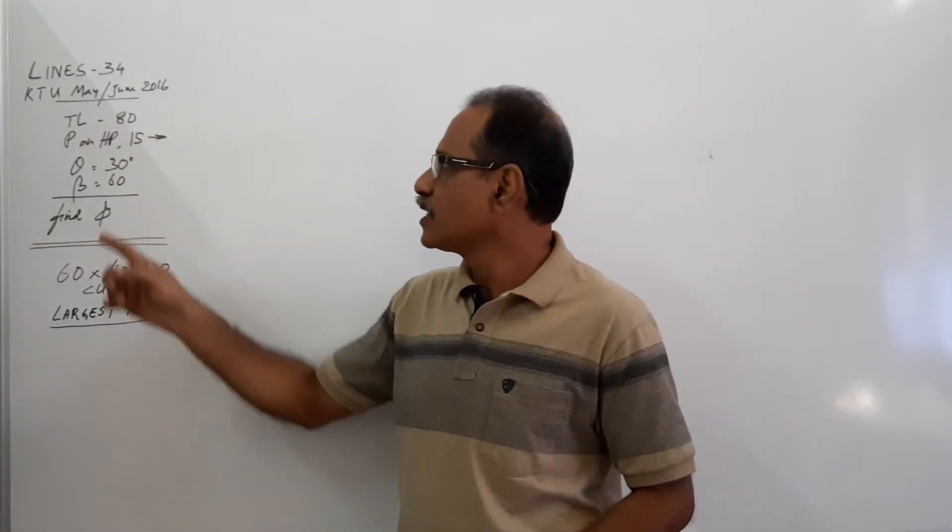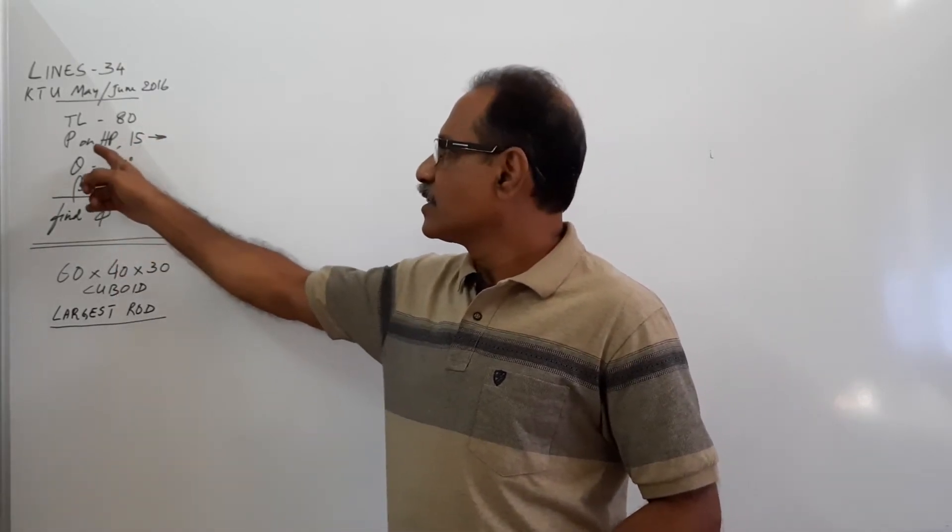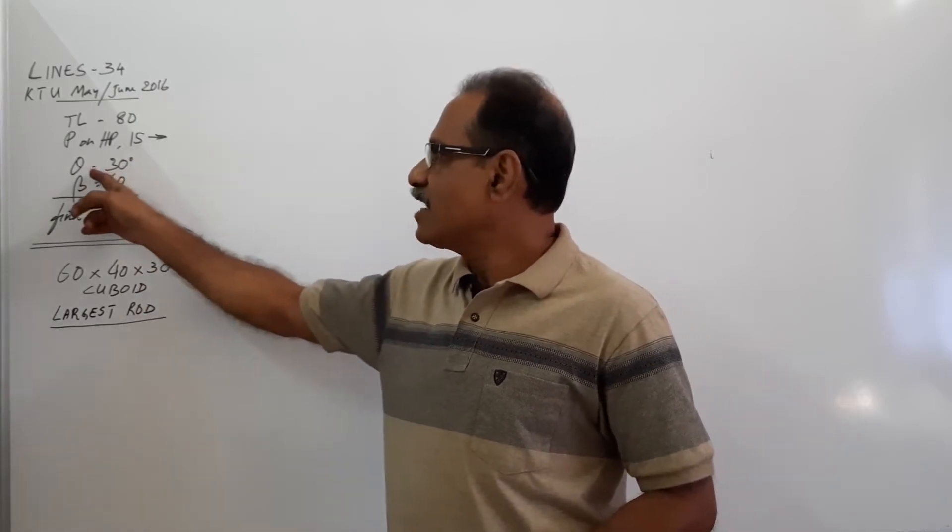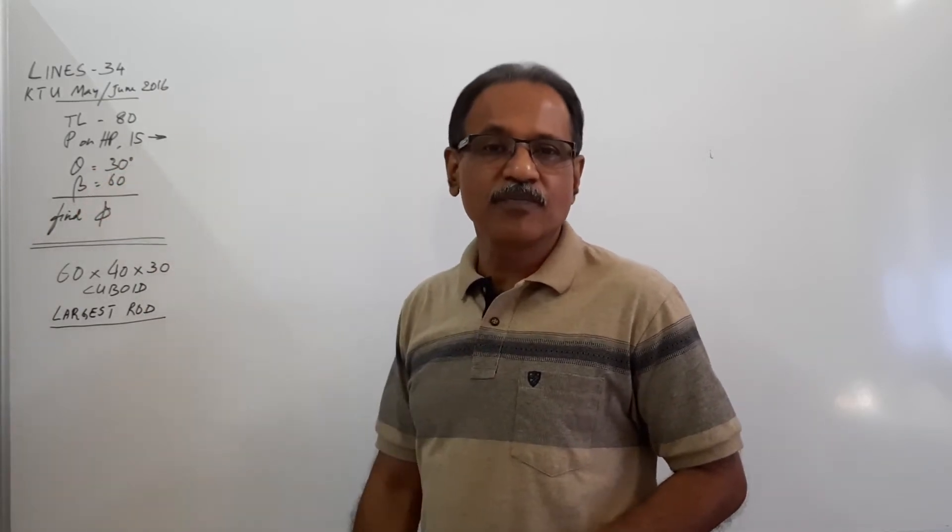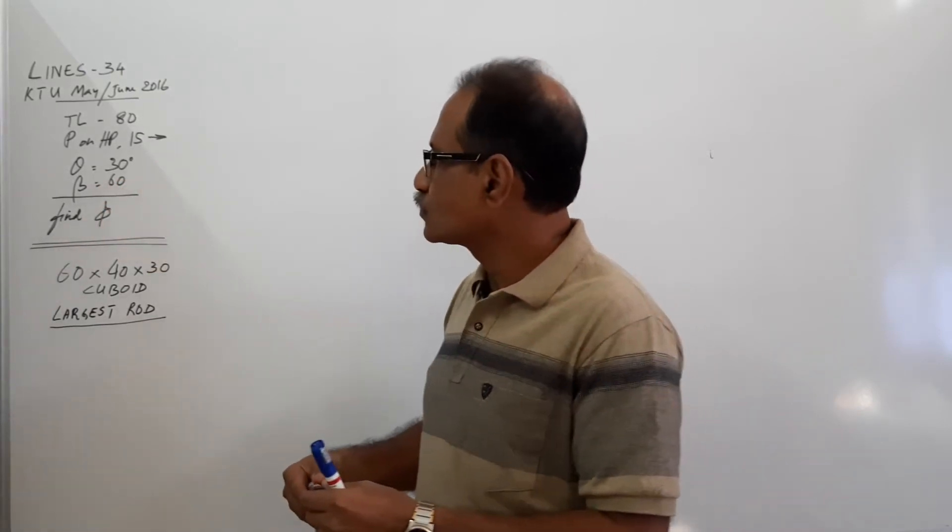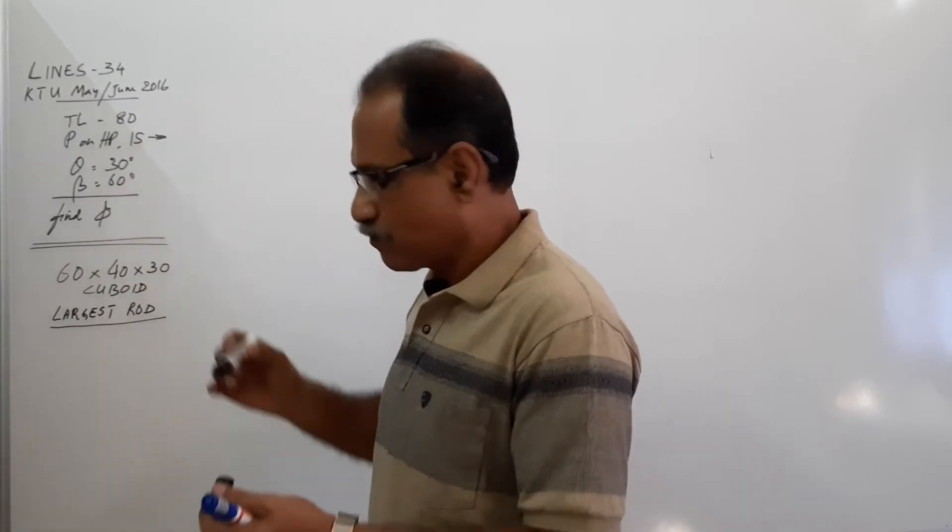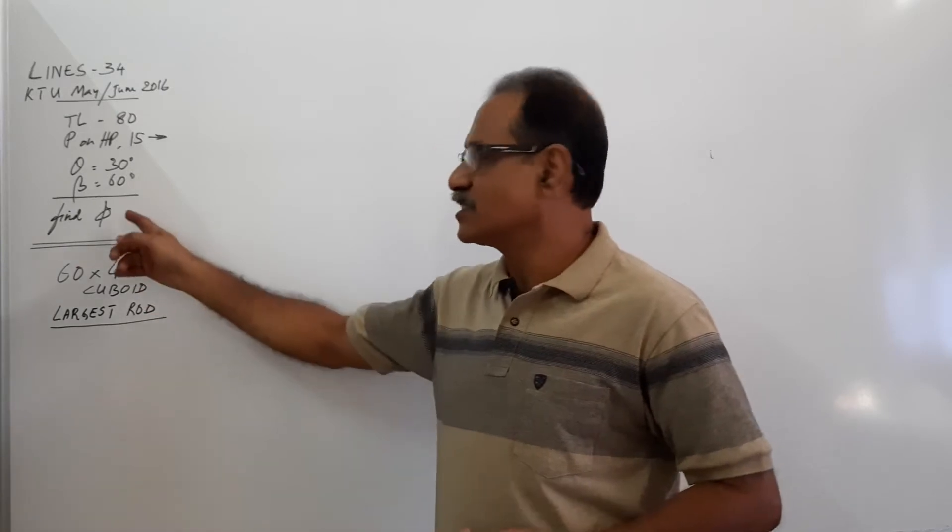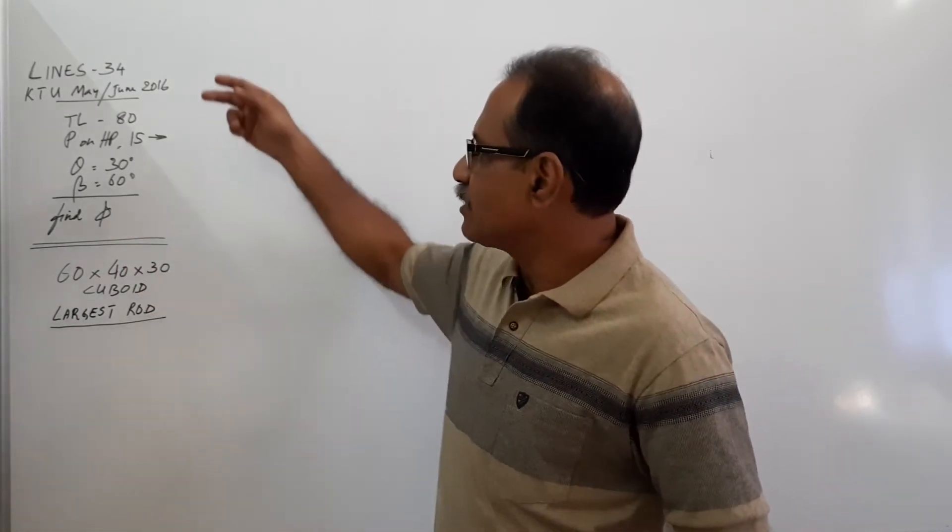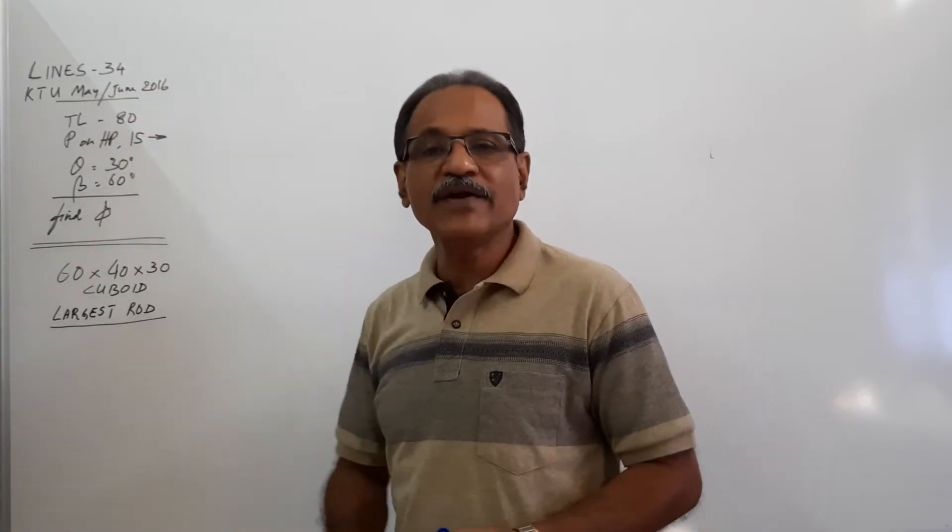The first question is: true length of a line PQ is 80 mm, the end P is on HP and 15 mm in front of VP, the line makes 30 degrees to HP, the top view of the line makes 60 degrees to XY line. You are asked to draw the projections and find out the inclination of the line to VP. Let us examine the question. One, two, three, four, and five. Five data are given.